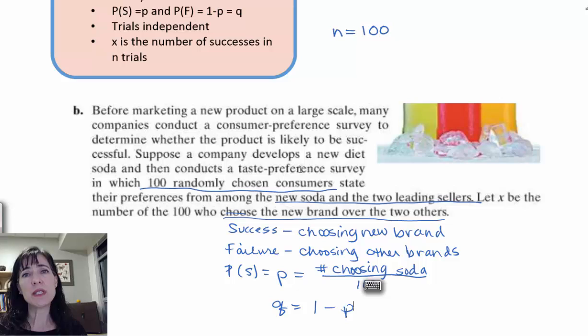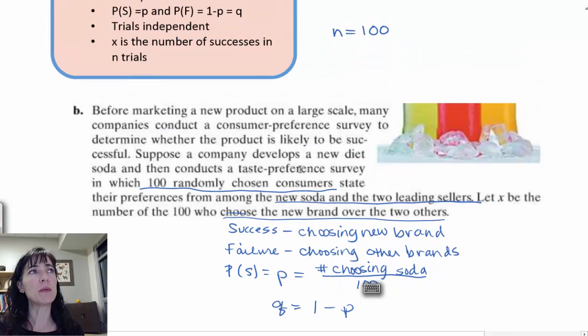But the outcome for one person, we can assume, is not influencing other people and their responses in the trial. So that would be the independent part, and I think we can assume that it's independent. So we'll just put a little check mark there by independent.